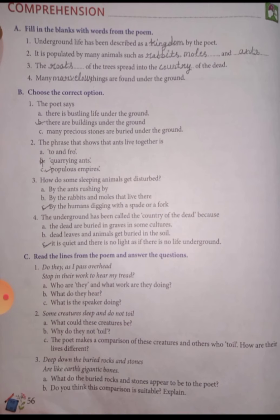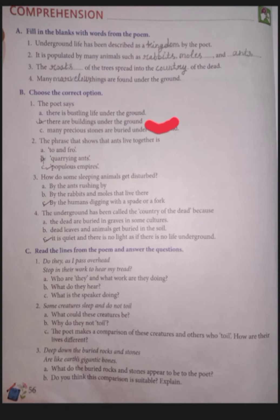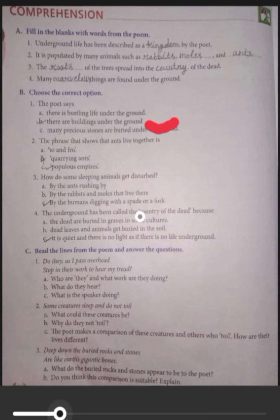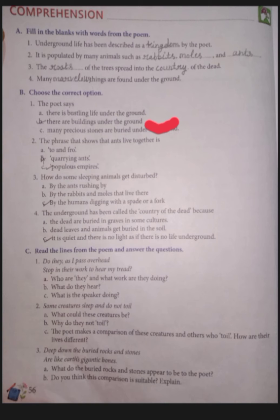Third: the roots of trees and buildings go underground. The phrase that shows that ants live together is 'populous empires.' How do some sleeping animals get disturbed? The third option is correct — by the woman digging with the spade or fork.